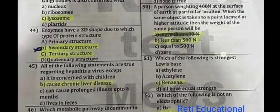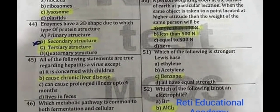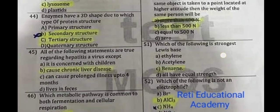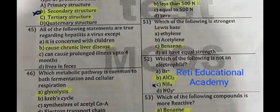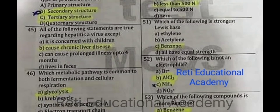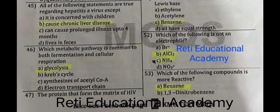Question number 44: Enzymes have a 3D shape due to which type of protein structure? C: tertiary structure is the correct answer. Question number 45: All of the following statements are true regarding Hepatitis A virus except it causes chronic liver disease. Question number 46: Which metabolic pathway is common to both fermentation and cellular respiration? The correct answer is A: glycolysis.